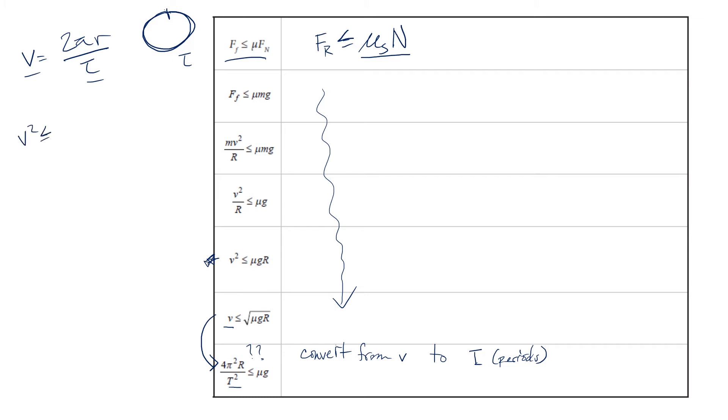v squared is less than or equal to μgr. I'm going to substitute v for 2πr over the period. So 2πr over the period squared is less than or equal to μgr. This becomes 4π²r squared over the period squared is less than or equal to μgr. r's cancel. And then we're left with 4π² over period squared times r is less than or equal to μg. Done and done.